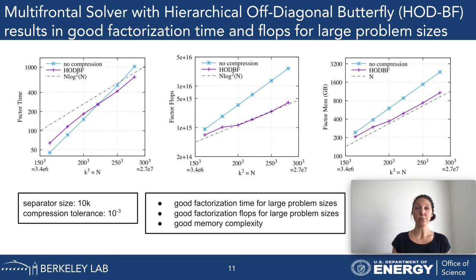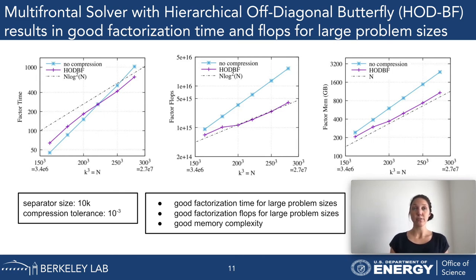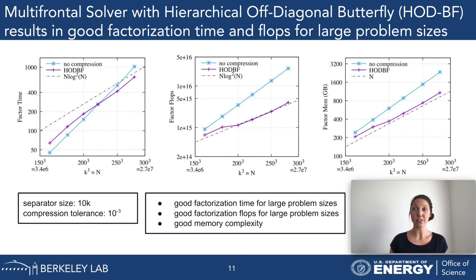For a problem size of 220³, the HODBF solver is actually faster—it has a faster factorization time—and the factorization flops and memory are also better, meaning lower, since we want less time, fewer flops, and less memory.